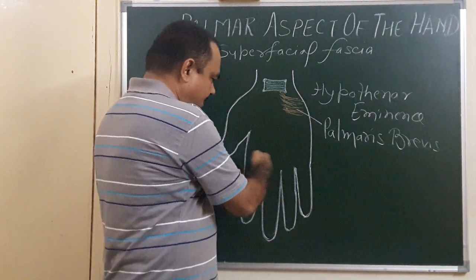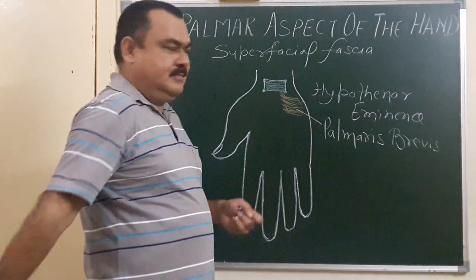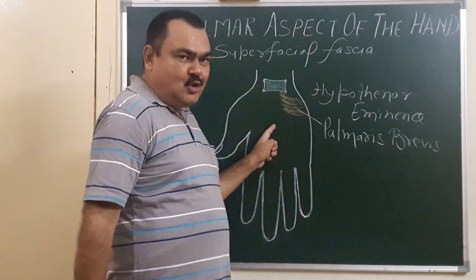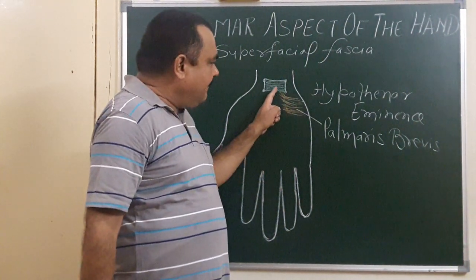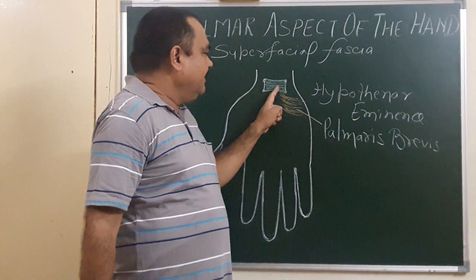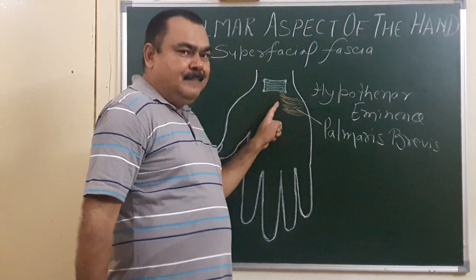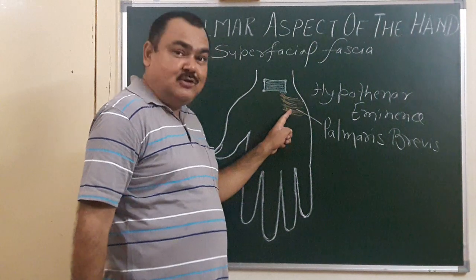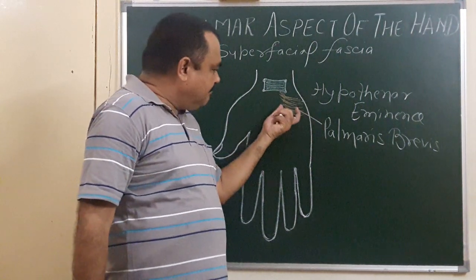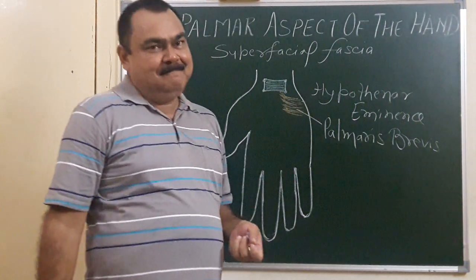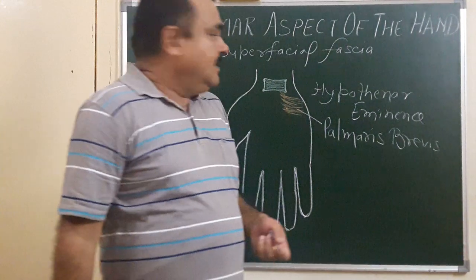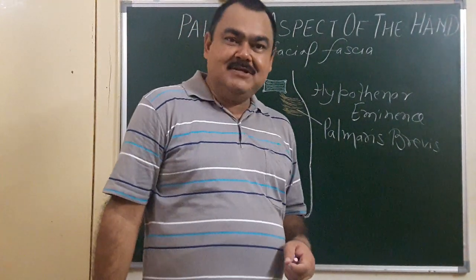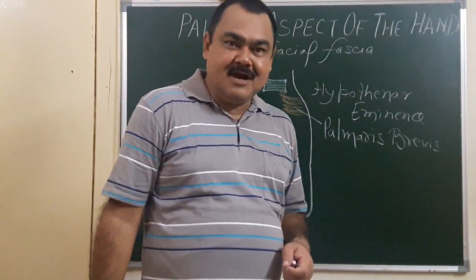Here is a triangular structure which is part of the deep fascia — that is the palmar aponeurosis. So Palmaris brevis takes origin from the deep fascia, that means from the flexor retinaculum and the palmar aponeurosis. It is inserted into the skin and is present in the superficial fascia. This muscle is supplied by the superficial branch of the ulnar nerve.